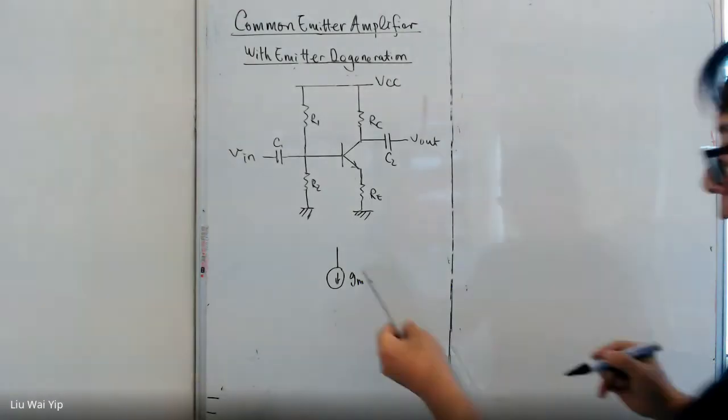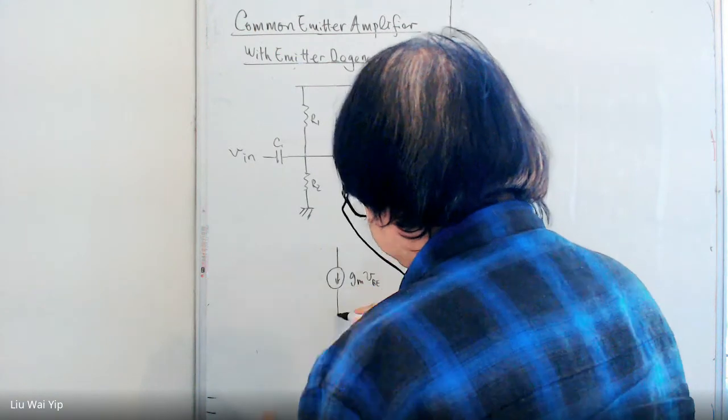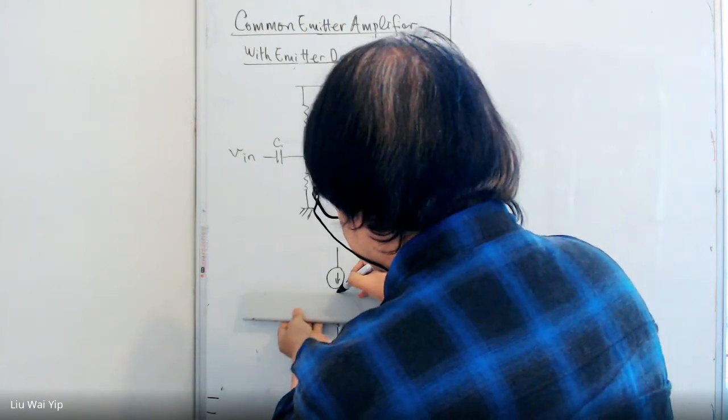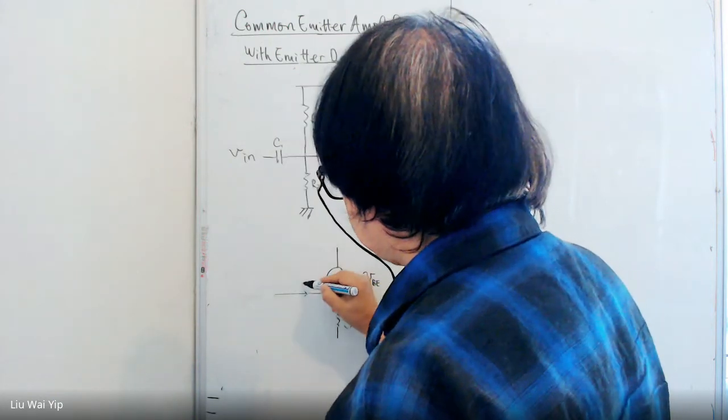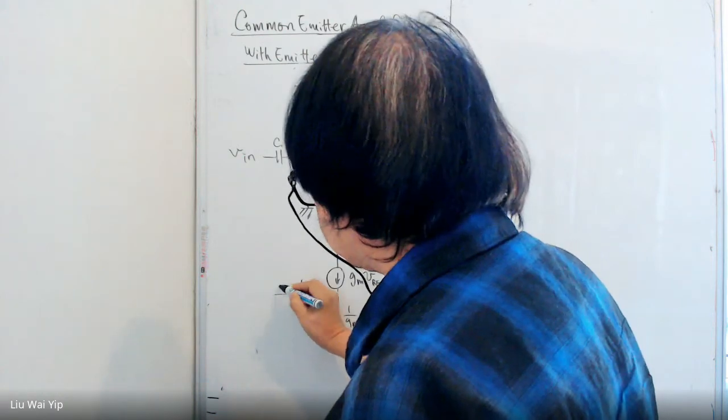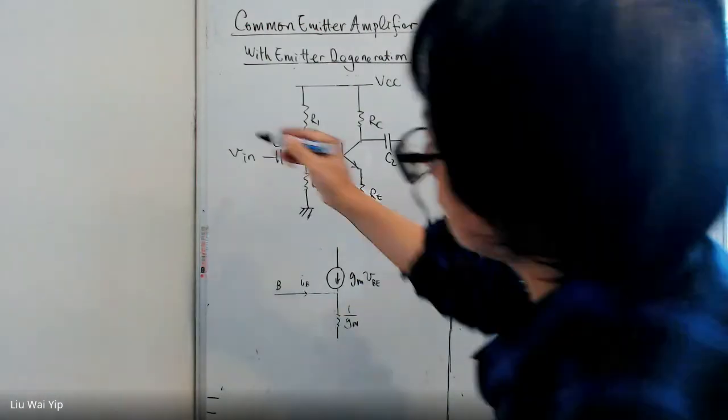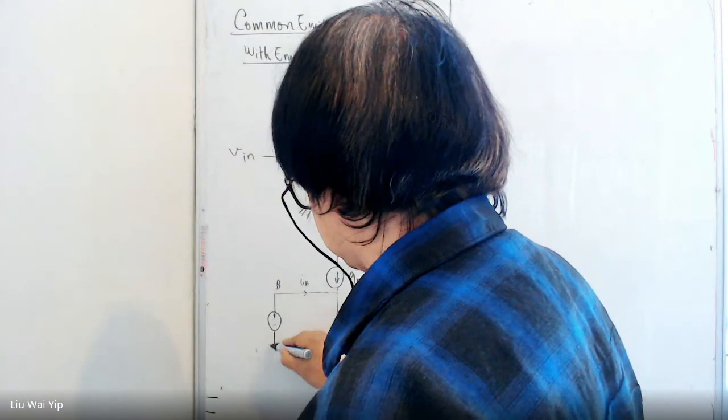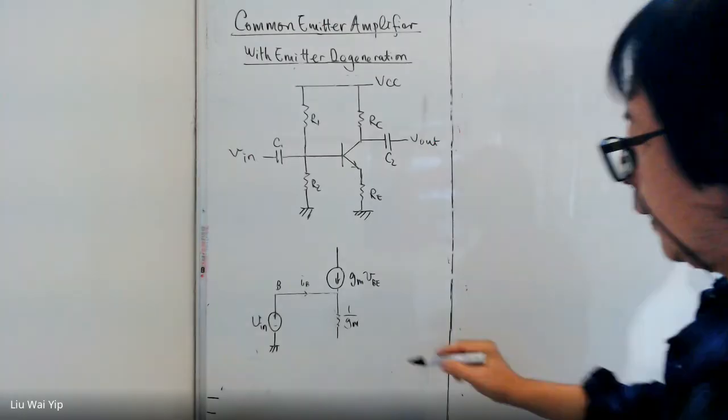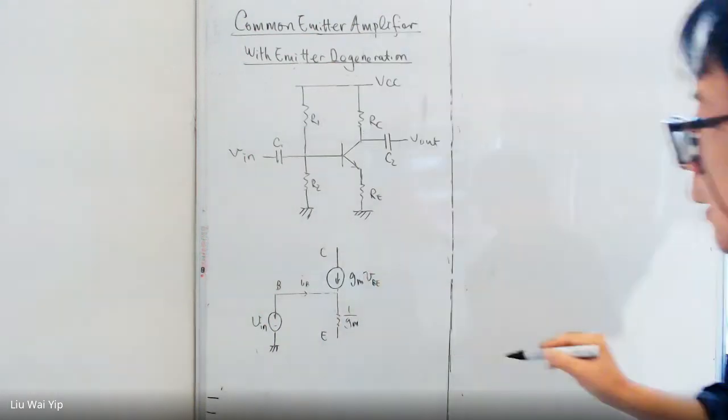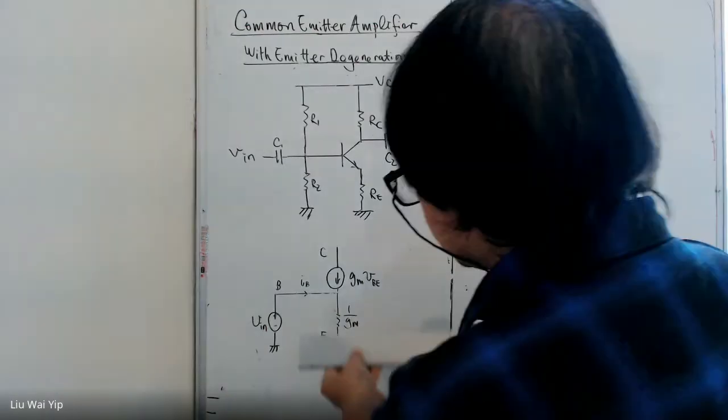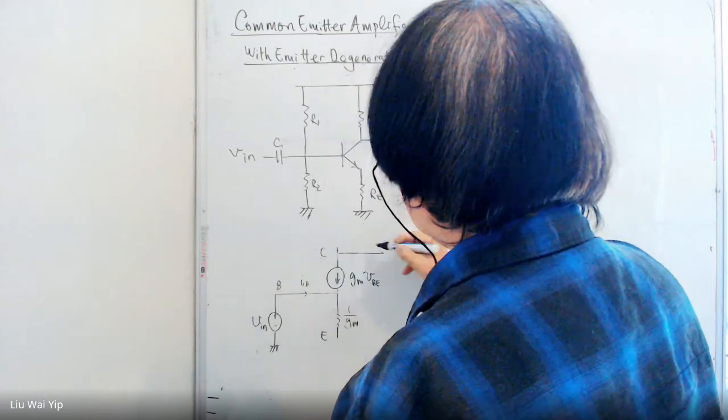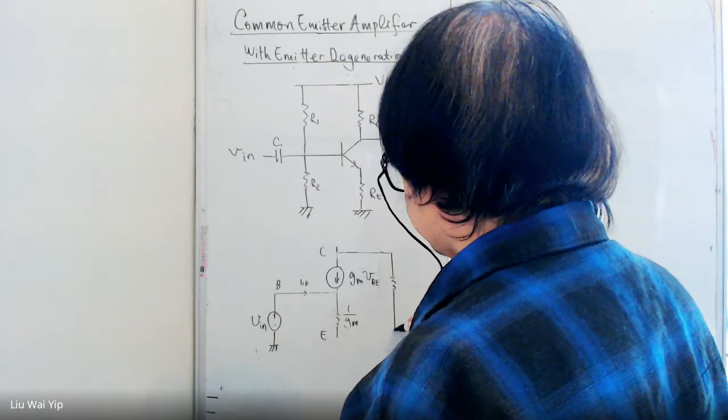Then, T model. I can connected to gm, 1 over gm and IB and this is the B terminal and the B terminal is in turn connected to the source voltage, the signal source. This is the C terminal and do not forget that there is an early effect.